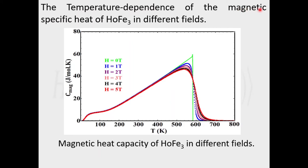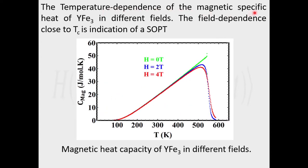The results of heat capacity. The temperature dependence of the magnetic specific heat of holmium iron-3 in different fields shows that the heat capacity reduces as we increase the external magnetic field. The temperature dependence of the magnetic specific heat of yttrium iron-3 in different fields also shows that the field dependence close to Tc is an indication of second order phase transition.